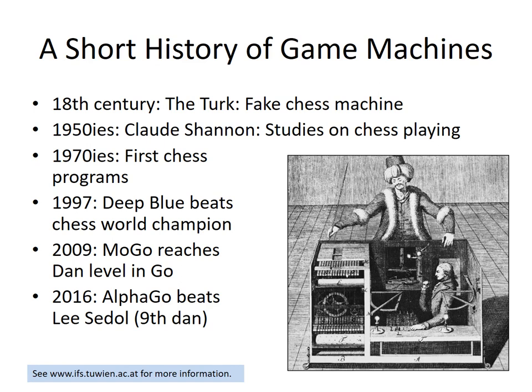Of course the contest was not fully fair because AlphaGo had, due to parallel processing, invested decades of training for the game of Go — which is possible for a machine but hardly possible for a human being.